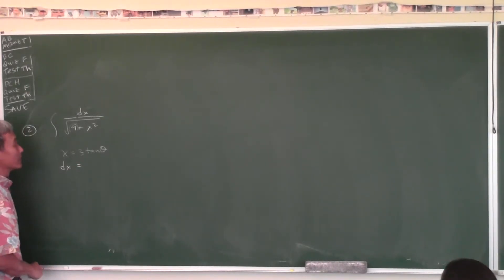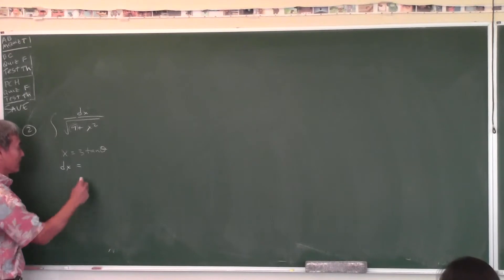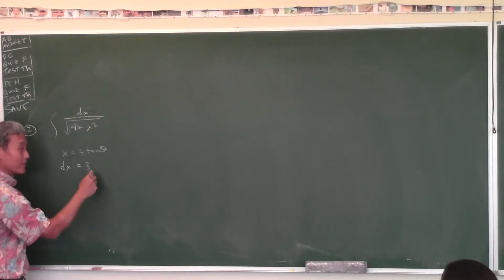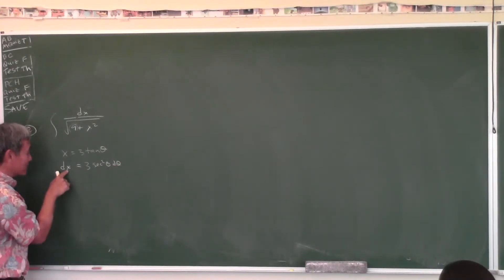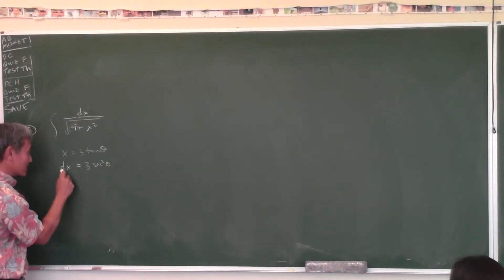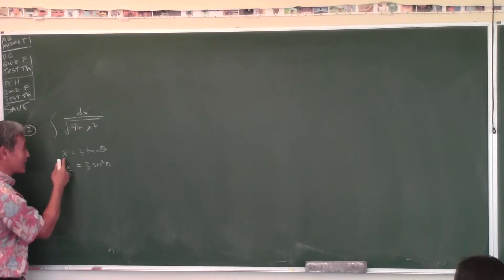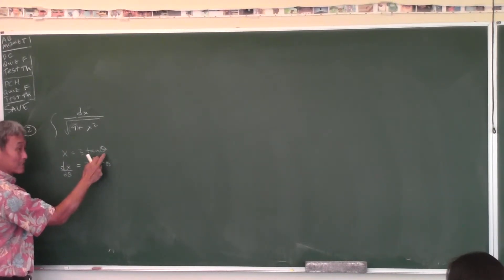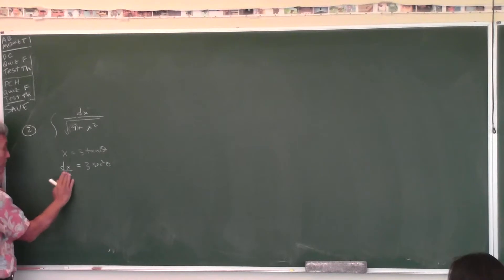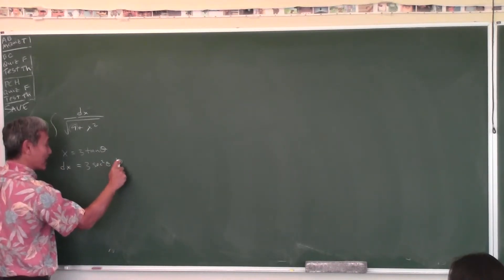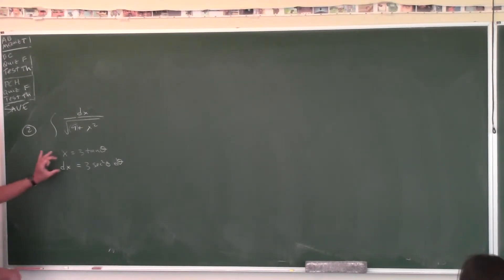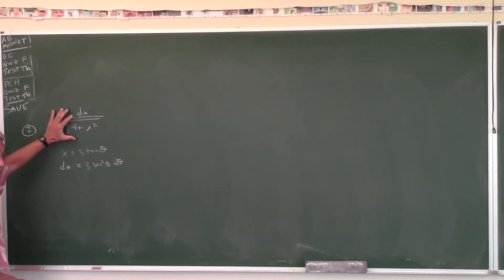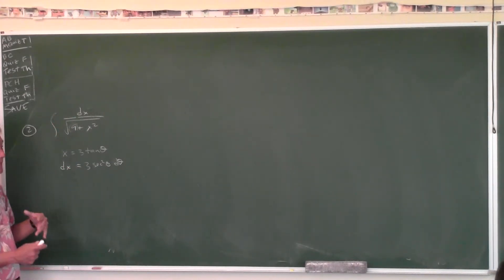Substituting: the dx becomes 3 sec²θ dθ. On the bottom, you have √(9 plus X squared) which becomes √(9 plus 9 tan²θ). Factor out the 9: you get √(9(1 plus tan²θ)). And 1 plus tan²θ equals sec²θ — an identity pops up, that's why you do it.